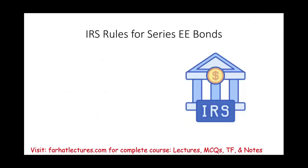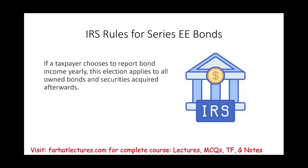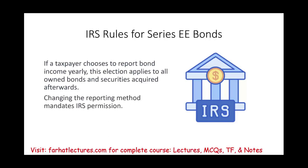Regarding IRS rules for Series EE bonds: if a taxpayer chooses to report the bond interest yearly, this election applies to all owned bonds and similar securities acquired afterwards. If you choose to change the reporting method, you must notify the IRS. For additional resources on Series EE savings bonds — including lectures, multiple choice questions, true/false questions, and notes — go to Farhat Lectures.